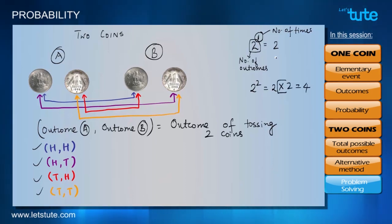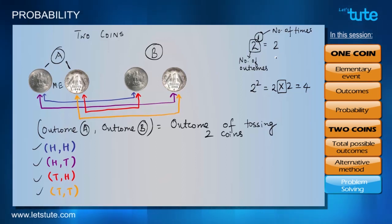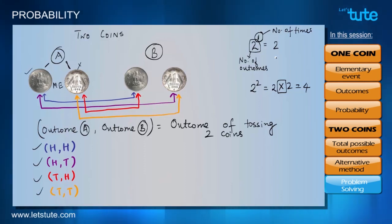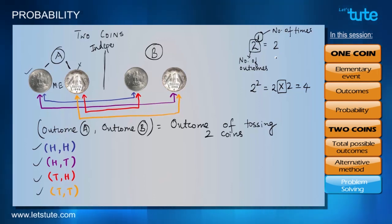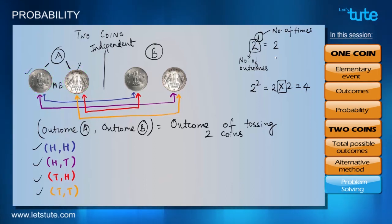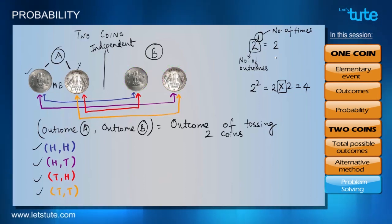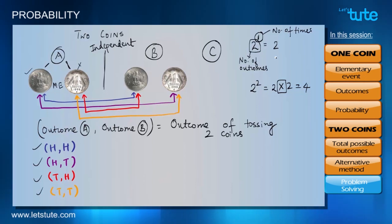We use multiplication rather than addition because, while outcomes of a single coin are mutually exclusive, tossing two coins are independent events. Whatever outcome appears on coin A will not interfere with the outcome from coin B. Whenever events are independent, we multiply.